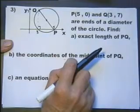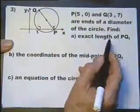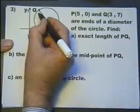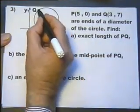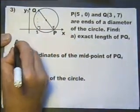Find the exact length of PQ—in other words, how long is this diameter? We have a right angle triangle, so it's Pythagoras.